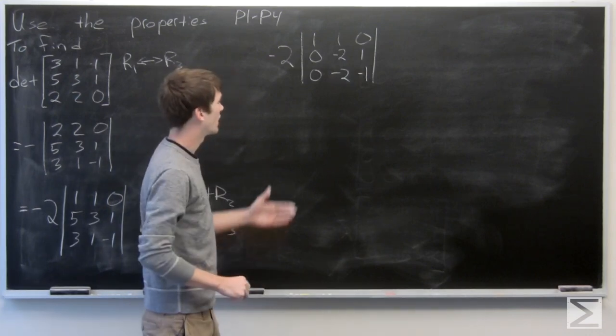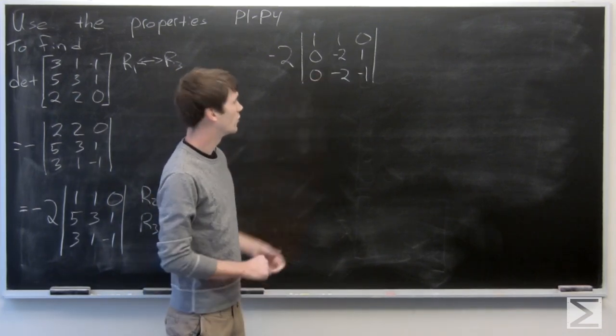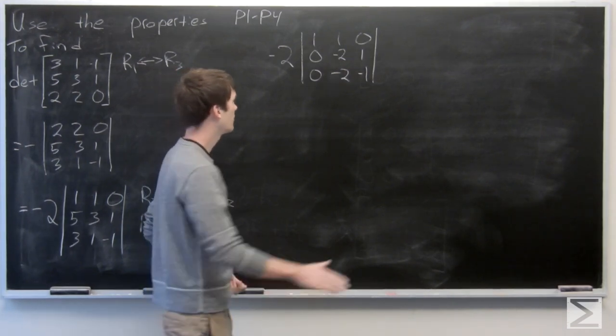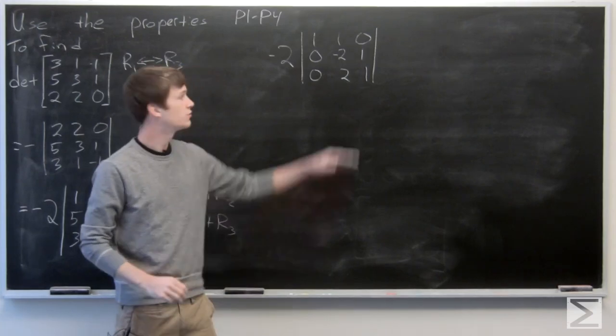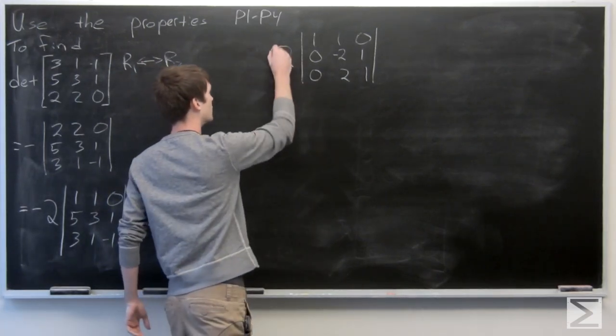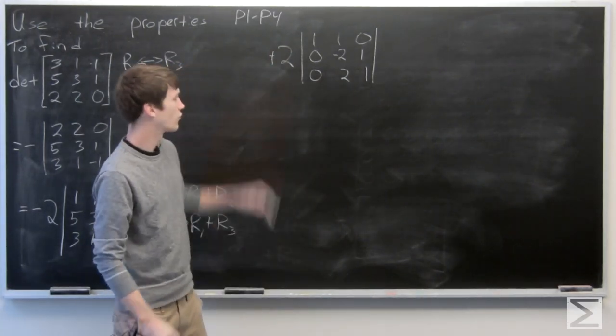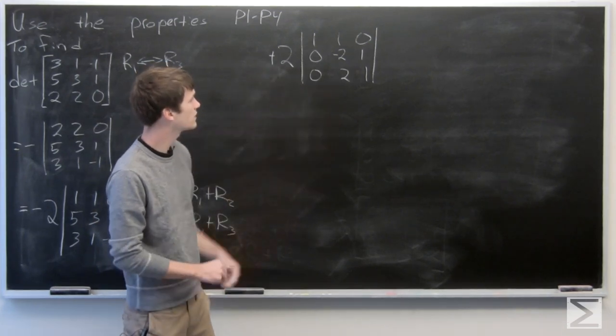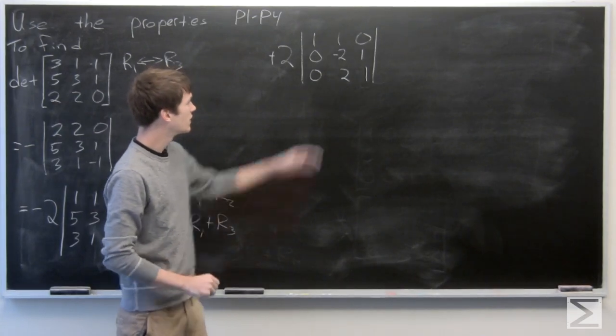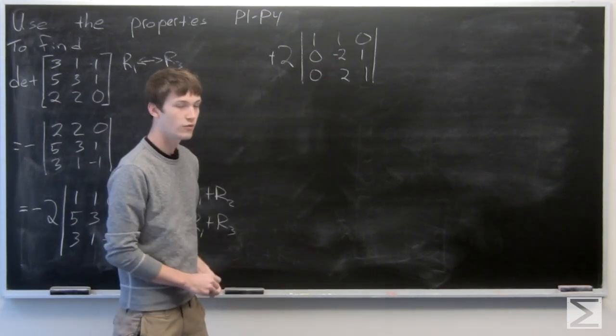We'll multiply our third row by negative 1, which means that we also have to bring that value out. So we have a positive 2 times this now. And now it's easy to see if we just add our second row to our third row.